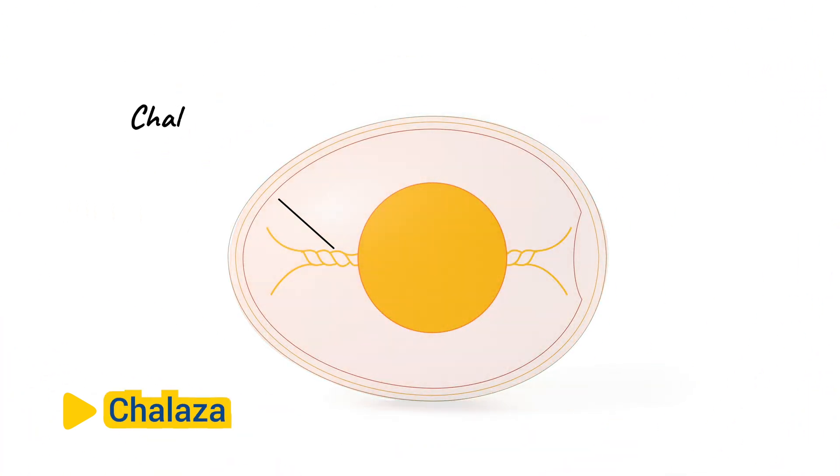Chalaza. The chalaza is a pair of twisted rope-like structures that anchor the yolk in place within the egg white. These structures help prevent the yolk from rotating or moving excessively during incubation, ensuring that the embryo remains in the optimal position for development.